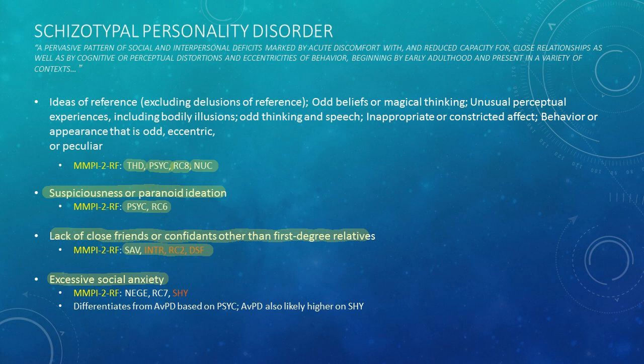It's more broad-based negative emotionality that seems to be related to schizotypal PD with the MMPI-2-RF than specifically shyness. Schizotypal differentiates from avoidant PD based on psychoticism and other thought disorder indicators — none of those would be expected in avoidant PD. Avoidant PD is also likely to be much higher on shyness.